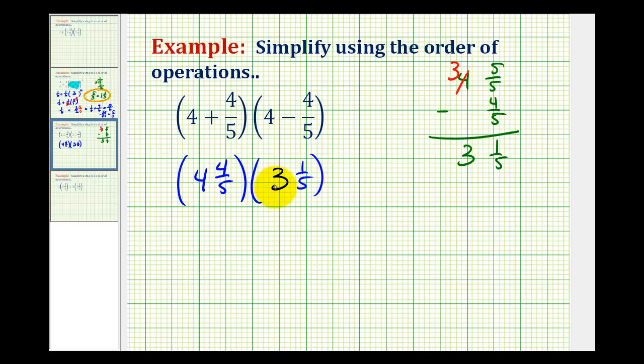And now we want to multiply these mixed numbers, but to multiply mixed numbers, we have to rewrite these as improper fractions.